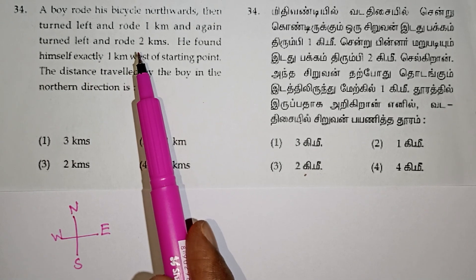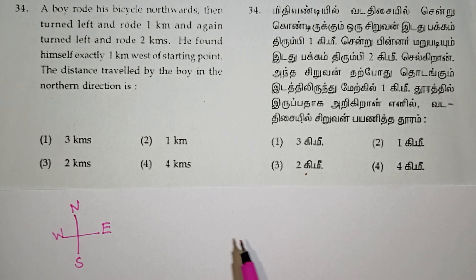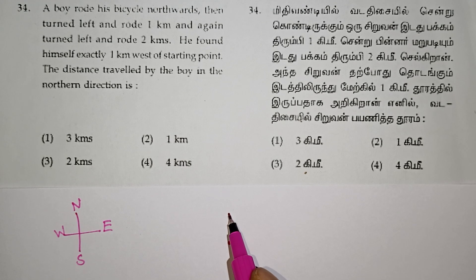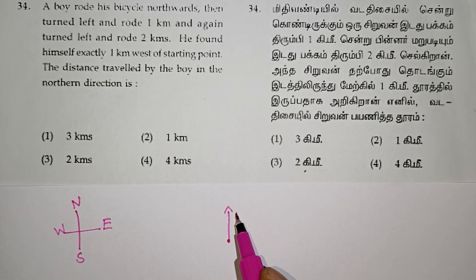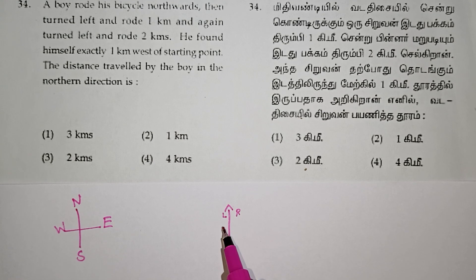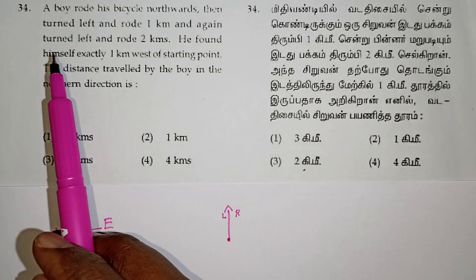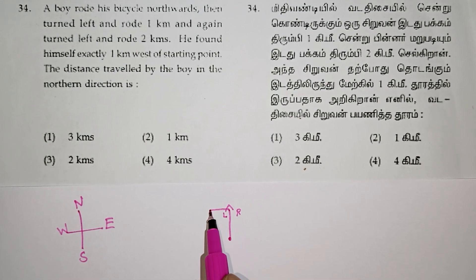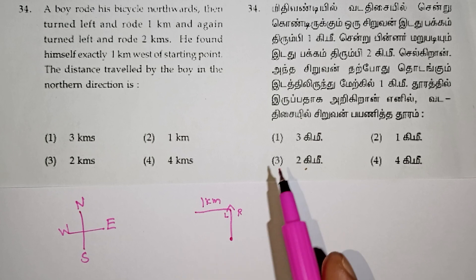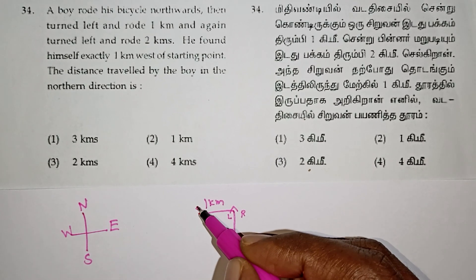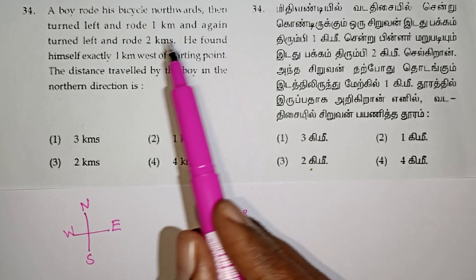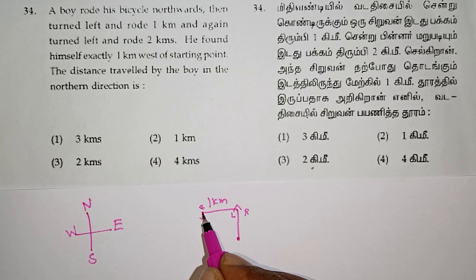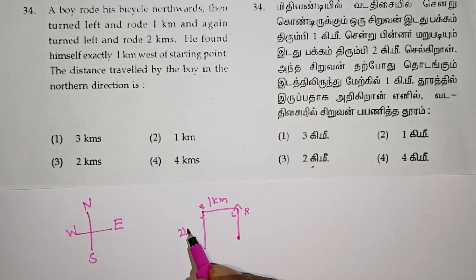A boy rides his bicycle northwards — this is the starting point. Moving in the north direction, if you move this way you can see the right-hand side and left-hand side. Then turn left and ride 1km — you travel to the left-hand side 1km. Again, turn left and ride 2km — you travel to the left-hand side 2km.